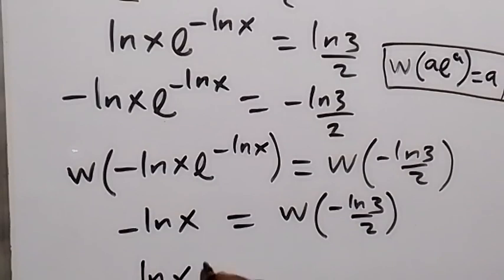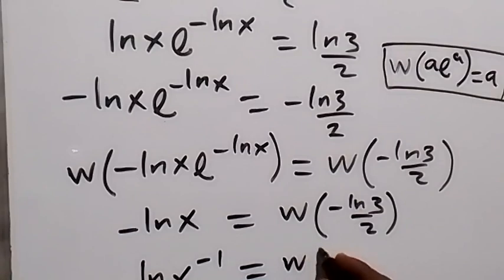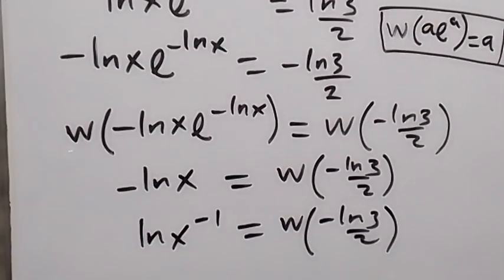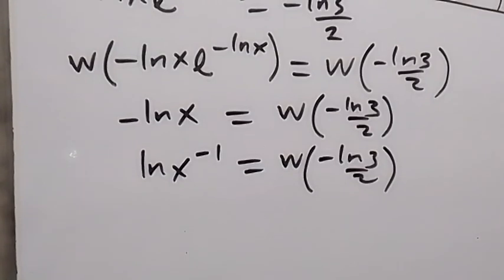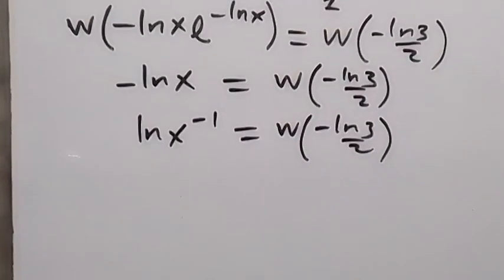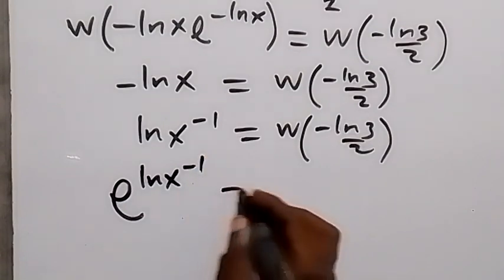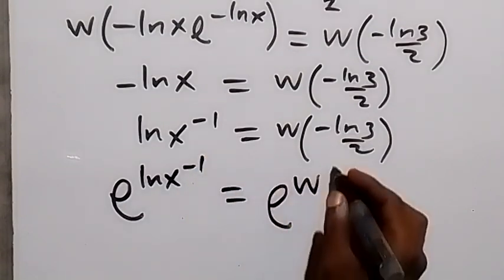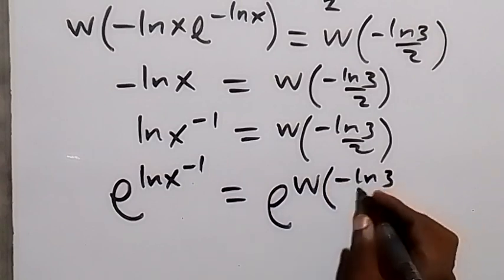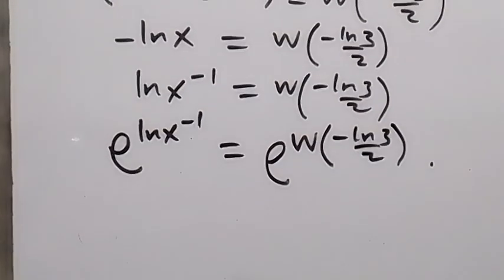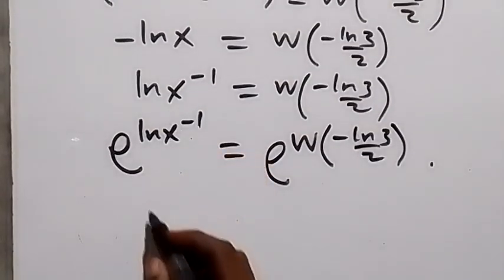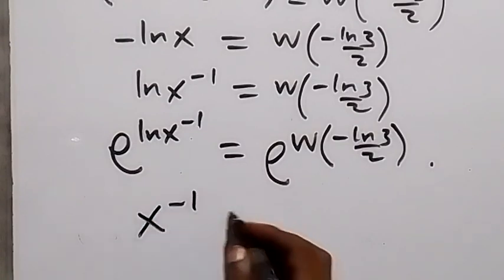We can write minus ln(x) as ln(x) raised to the power of minus 1. This equals W of minus ln(3)/2. Introducing the exponential on both sides: e raised to the power of ln(x)^(-1) equals e raised to the power of W(minus ln(3)/2). The e and ln cancel on the left, leaving x to the power of minus 1.